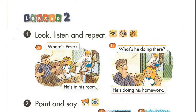Page 54. Lesson 2. Activity 1. Look, listen and repeat. A. Where's Peter? He's in his room. B. What's he doing there? He's doing his homework.